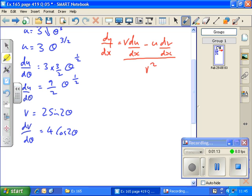So now putting into the quotient rule, we get dy by dx equals v, which is 2 sine 2 theta, times du by d theta, or du by d theta in this case, which is 9 over 2 theta to the half,